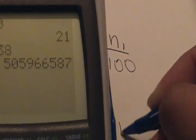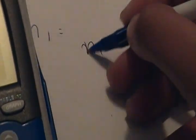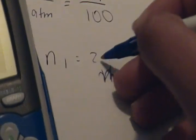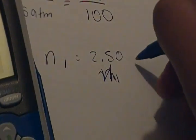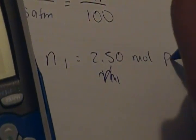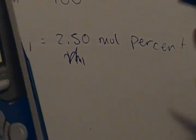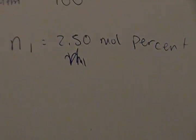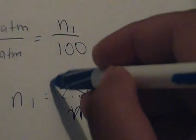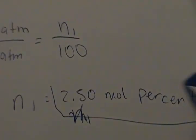So n1 is equal to 2.5 mole percent. And if we check in the book, it's the right answer. So for number 67, this is the answer.